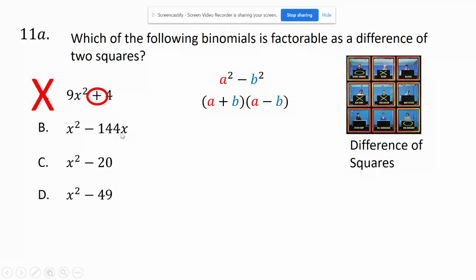This B option has an x² and an x. I can square root x² and 144, but not an x, so therefore this one's not.